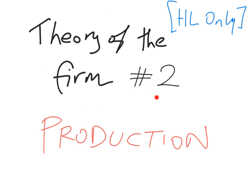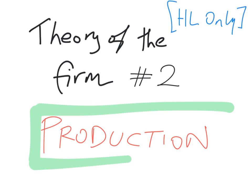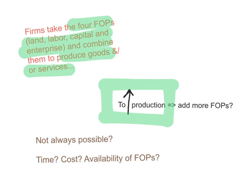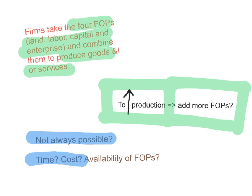This is the second of the Theory of the Firm series in section 1.5 of the IB Economics Higher Level component of the syllabus. In this video I will focus more on production. In the previous video, firms take the four factors of production and combine them to produce goods and services. If you want to increase production, the solution seems to be to add more factors of production. But this is not always possible because increasing factors of production might take time, cost money the firm can't afford, or the factors may simply not be available.